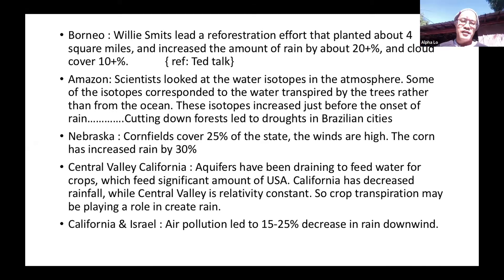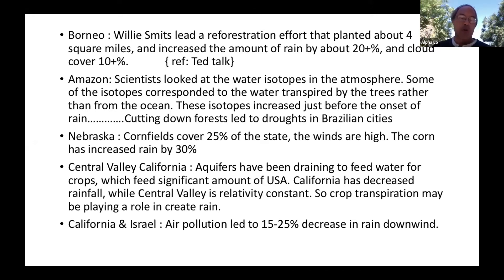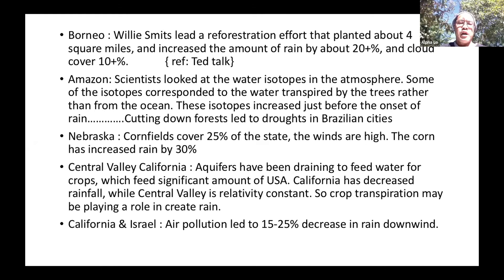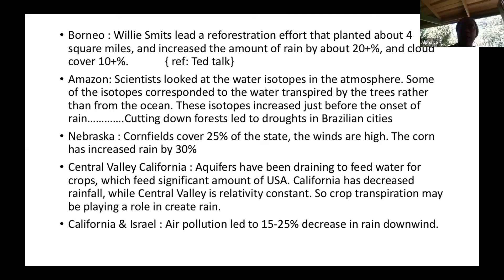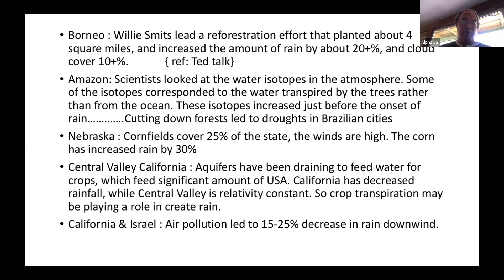In Nebraska, cornfields cover about 25% of the state and winds are high, blowing water vapor around — yet the corn has still increased rain by 30% there. In California's Central Valley, aquifers have been heavily drained to feed much of the US. While California overall has seen decreased rainfall, the Central Valley's rainfall has remained fairly constant, suggesting that crop transpiration may have played a role in creating some rain.